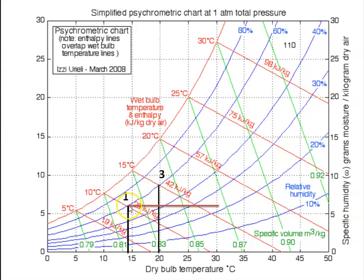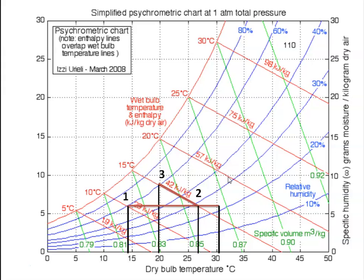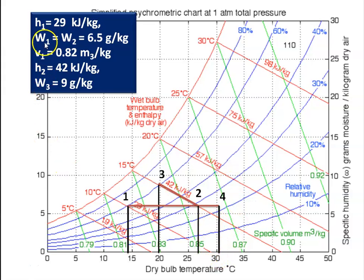The final condition is achieved first by sensible heating — drawing a horizontal line from point 1 since sensible heating has no change in specific humidity — and then by adiabatic humidifying, drawing an inclined line along the enthalpy line from point 3 back to point 2. The intermediate temperature at point 2 is 24 degree Celsius. The properties from the psychrometric chart: H1 equal to 29 kilojoules per kilogram, W1 equal to W2 equal to 6.5 grams per kg, H2 equal to H3 equal to 42 kilojoules per kilogram, and W3 equal to 9 grams per kg.